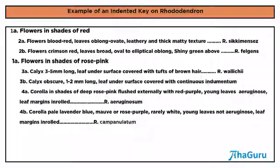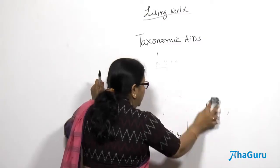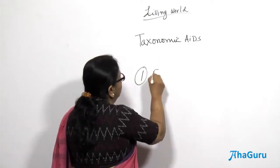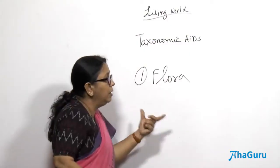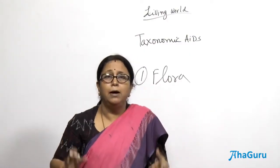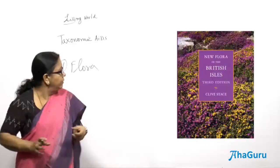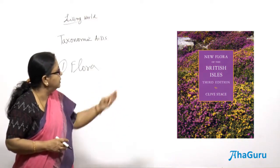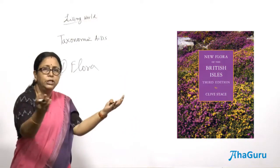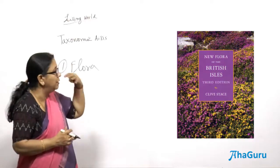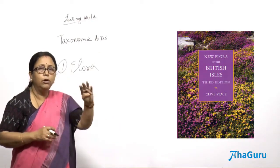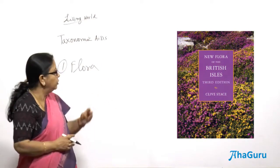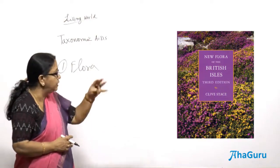Apart from the taxonomic key, there are certain books available. There is something called flora — a book that tells you about all the species of plants growing in a particular region. For example, 'Flora of the British Isles' covers plants found in that region. Similarly, 'Flora of Delhi' would include an index of all plants available in Delhi. So flora gives you regional information about plants.